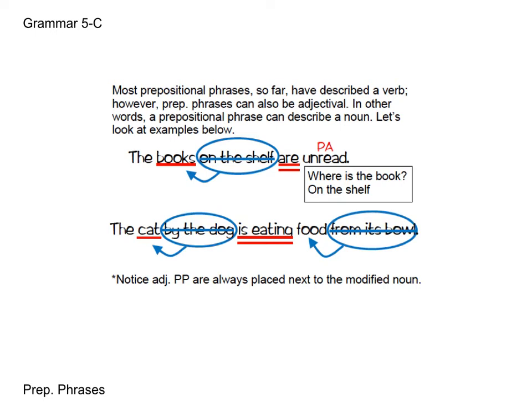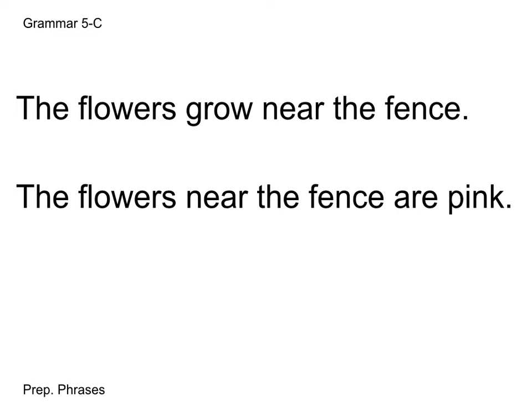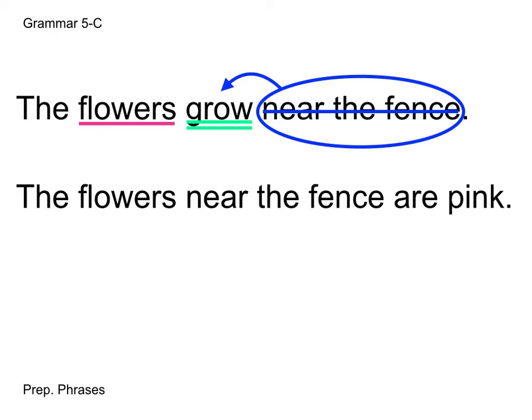Now let's look at our own examples. 'The flowers grow near the fence.' Flowers is our subject; growing is the action, so I'll double underline that. The phrase 'near the fence' tells us where the action is occurring — where the flowers grow. So we circle it and draw an arrow to 'grow.' This is exactly the type of adverbial prepositional phrase we've seen so far in grammar.